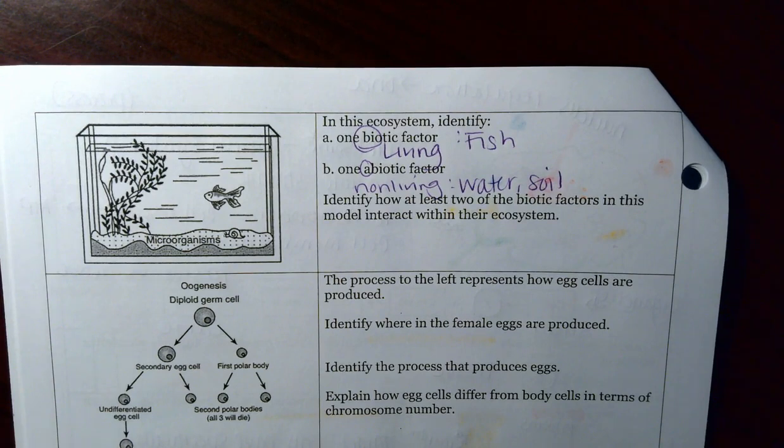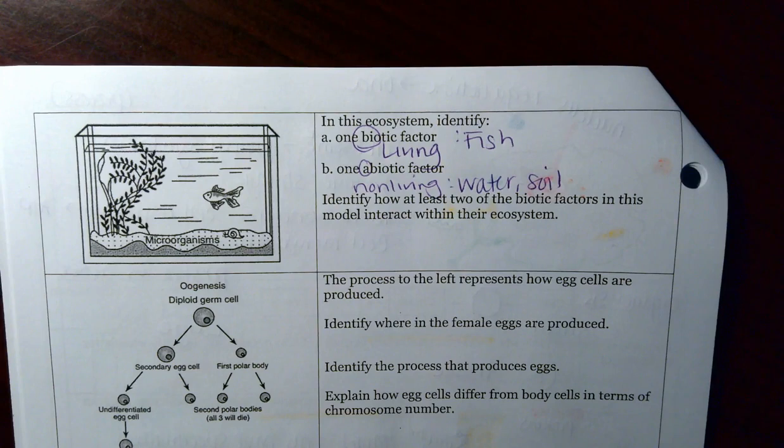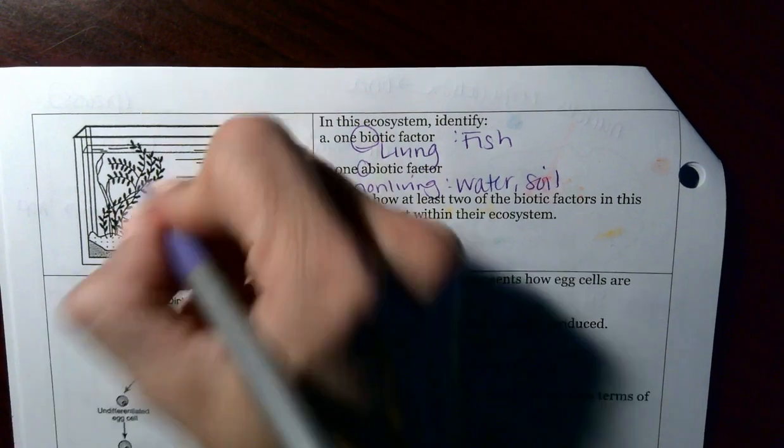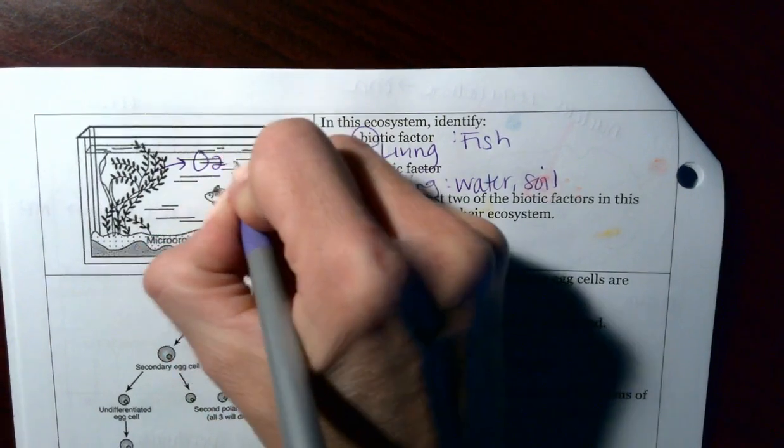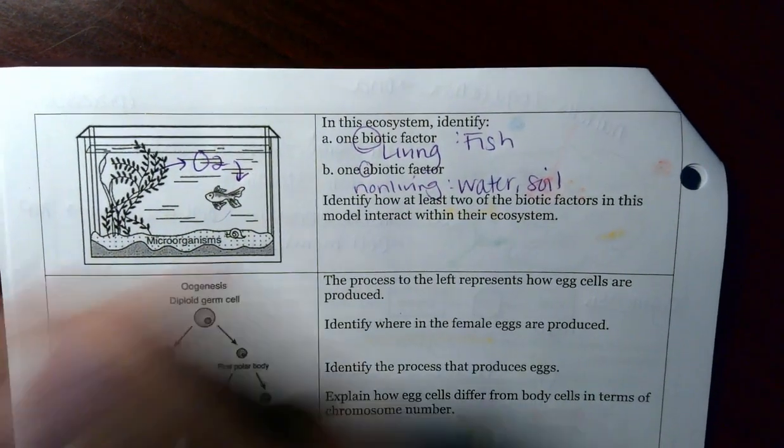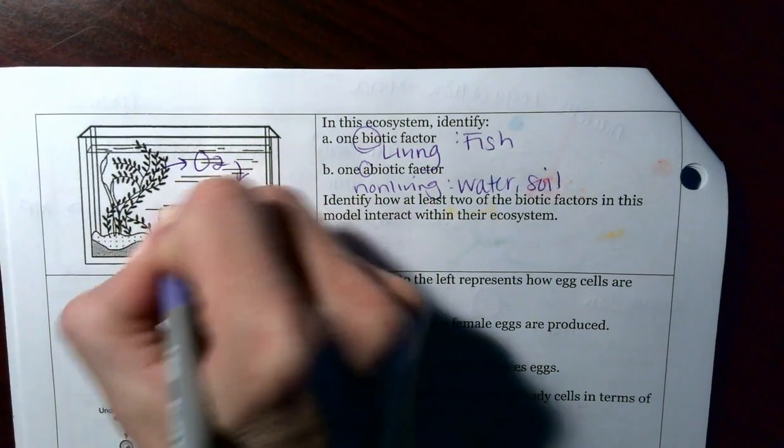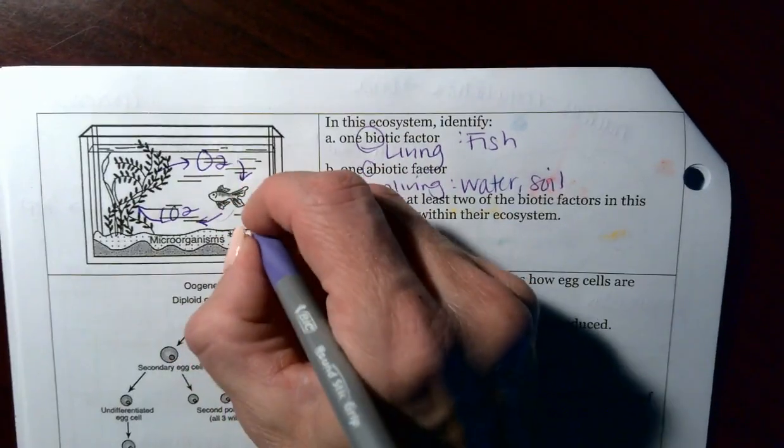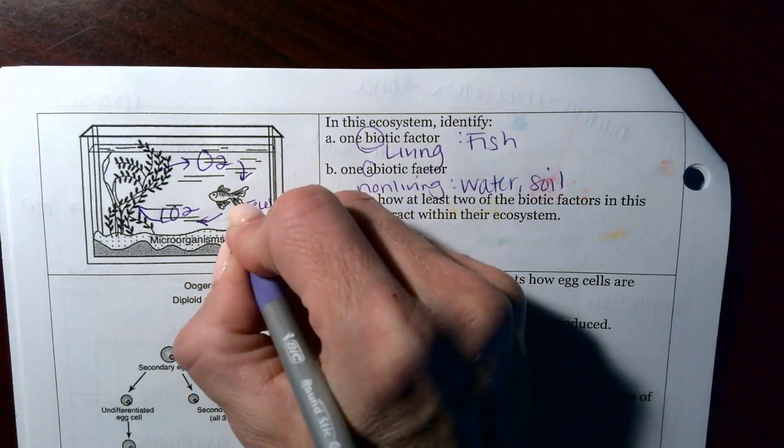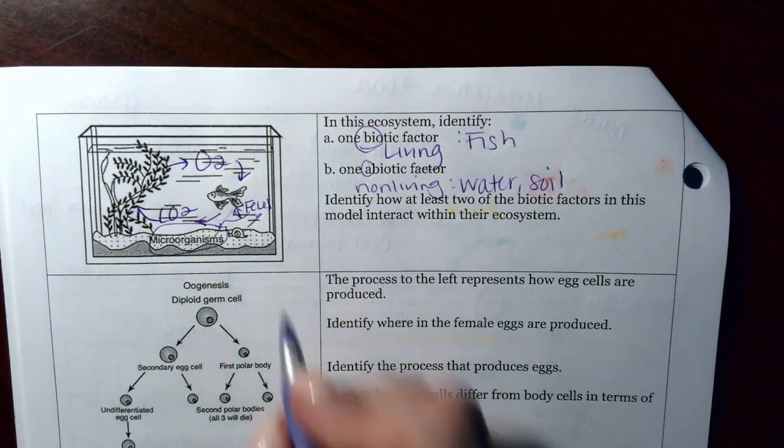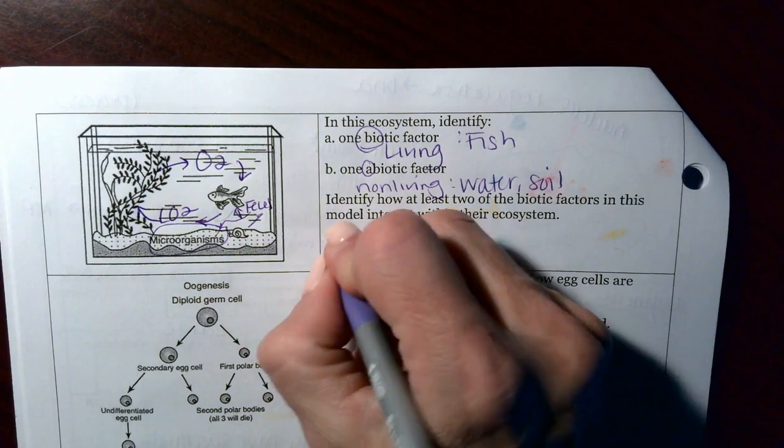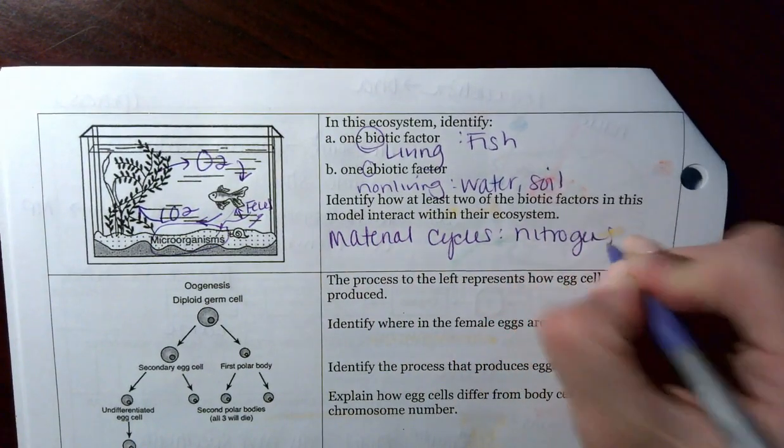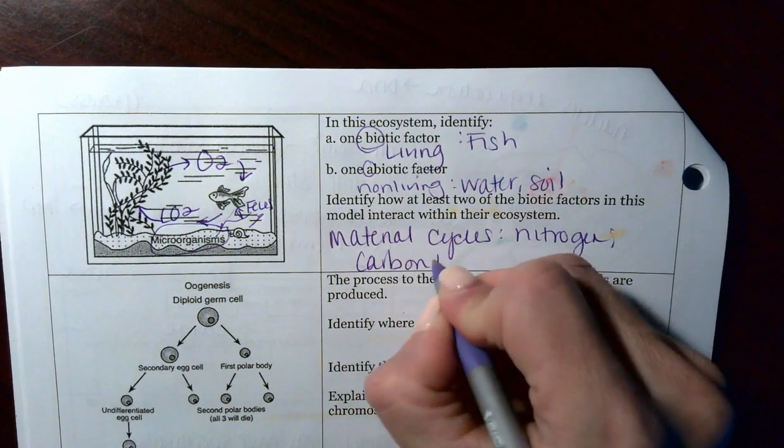Identify how at least two biotic factors in this model interact within their ecosystem. This, you can think about a material cycle, either through nitrogen, or you can think about a carbon dioxide-oxygen one. Let's say, like this guy, the plant gives off O2, then the fish uses the O2, then the fish gives off carbon dioxide, and then the plant uses the carbon dioxide. You could also think about the fact that the fish and the snail both produce feces, and then these microorganisms ingest the feces and recycle the material back in. So, again, I would use one of the material cycles, either for nitrogen, or more like a carbon and oxygen cycle.